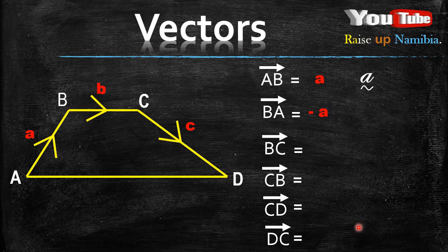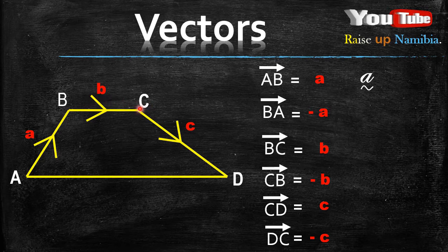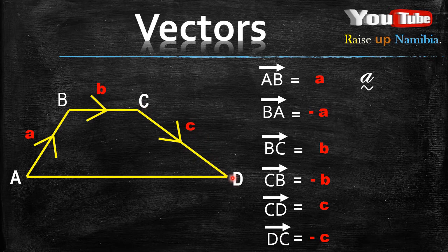The vector BC would be b — because when you come from B to C, it's already written that it's vector b. But from C to B, it's negative b, because when you go the opposite direction, you are going against the arrow. The same with CD and DC: going from C to D it's c, but from D to C it becomes negative c.